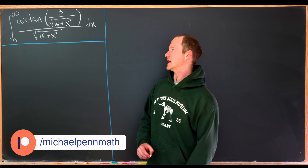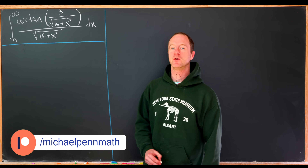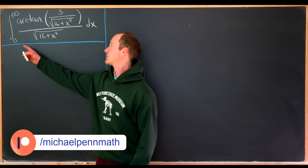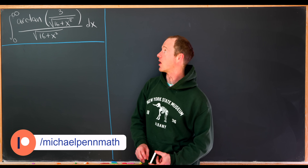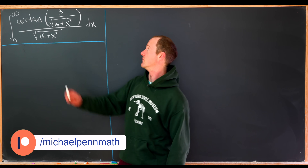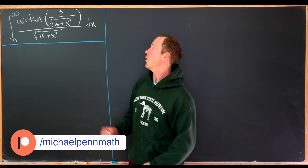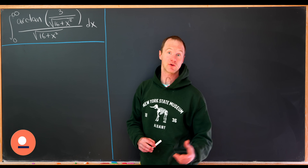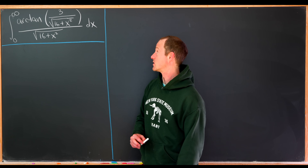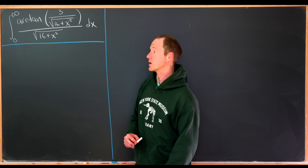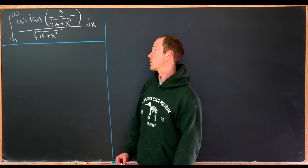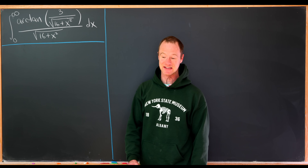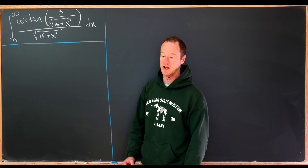So what are we looking at today? We have the integral from zero to infinity of the arctan of 3 over the square root of 16 plus x squared, all over the square root of 16 plus x squared.